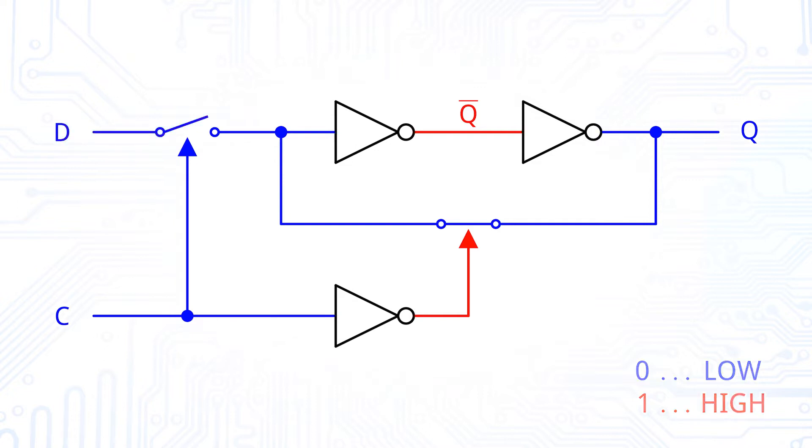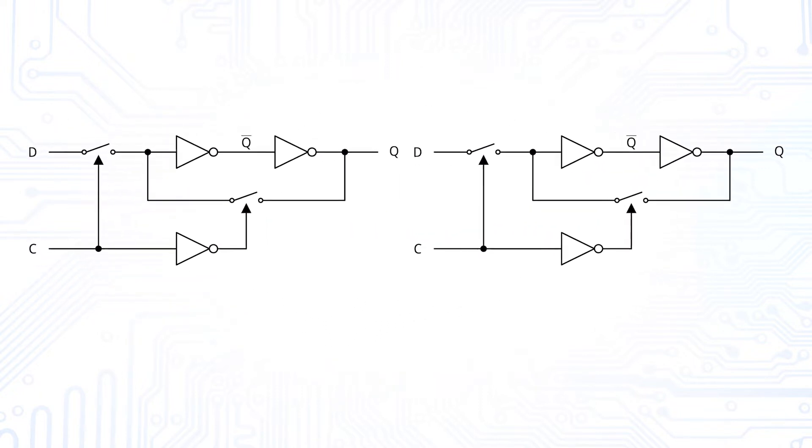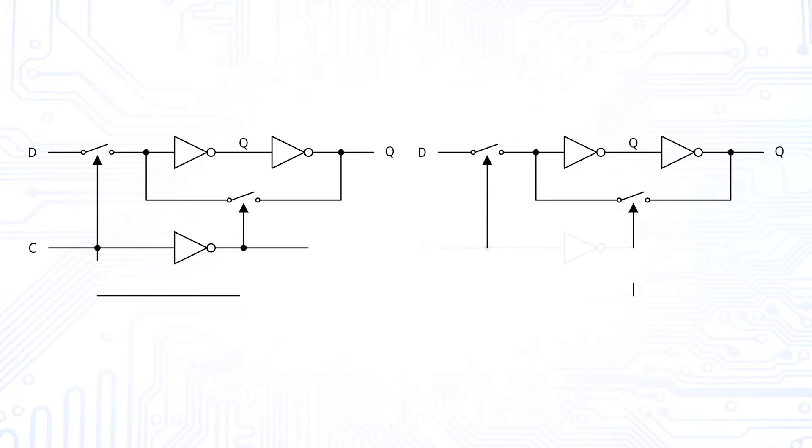Again, we have the functionality of a D-Latch. Now, we can take two of these D-Latches and put them one after the other, with opposite clock signals.